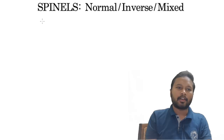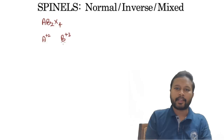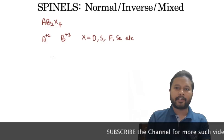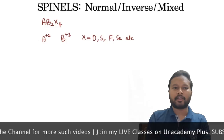Spinels are basically a type of crystalline solid with the general formula AB₂X₄, where A is a divalent cation, B is a trivalent cation, and X can be oxide, sulfide, fluoride, or selenide.